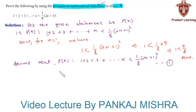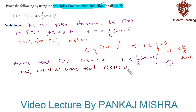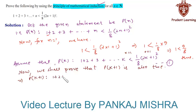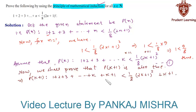In our last step, we shall prove that P(k+1) is also true. To get P(k+1), we simply add (k+1) on both sides of the inequality. Therefore P(k+1) states that 1 plus 2 plus 3 all the way up to k plus (k+1) is less than one-eighth of (2k+1) whole square plus (k+1).